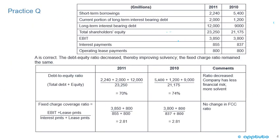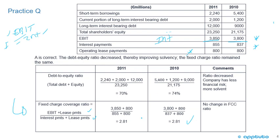Let's start with the fixed charge coverage ratio. All we're doing is adding the lease payments to the numerator and denominator. For 2010: EBIT of $3,800 plus lease payments of $800, divided by interest payments of $837 plus $800, gives $2.81. For 2011: EBIT of $3,850 plus lease payments of $800, divided by interest payments of $855 plus $800, also gives $2.81. So there's been no change in the fixed charge coverage ratio.